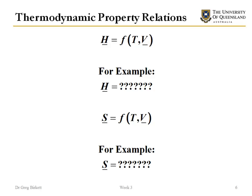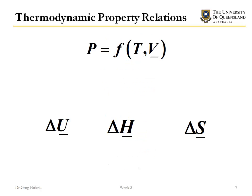The reason we have question marks is that we don't have direct equations for enthalpy and entropy like we do for pressure. What we need to do is relate pressure to changes in internal energy, changes in enthalpy, and changes in entropy. This can be done using thermodynamic property relations, and that's what we'll be looking at in this section.